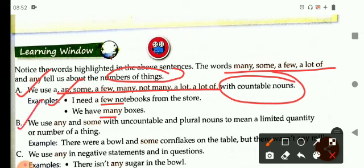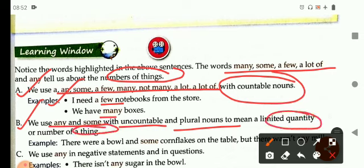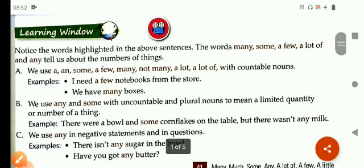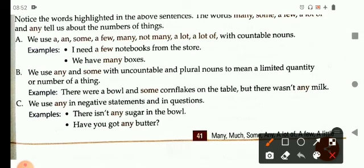We use any and some with uncountable and plural nouns to mean a limited quantity or a number of things. For example, there were a bowl and some cornflakes on the table, but there wasn't any milk. Here, any and some are used with uncountable and plural nouns. Some cornflakes is uncountable, and any milk is also denoting uncountable noun that cannot be counted.